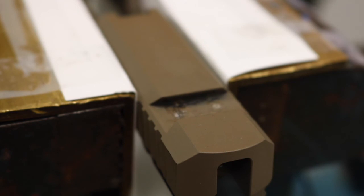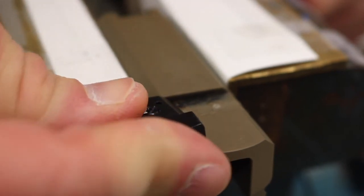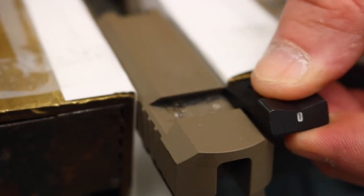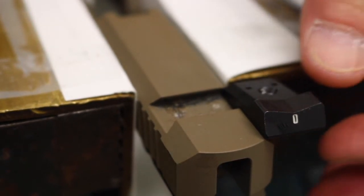Now, we can take the new rear sight and dry-fit it. As you can see, it's a little snug coming in from that direction. I'll go ahead and try the other side just in case. It's still a little too snug.